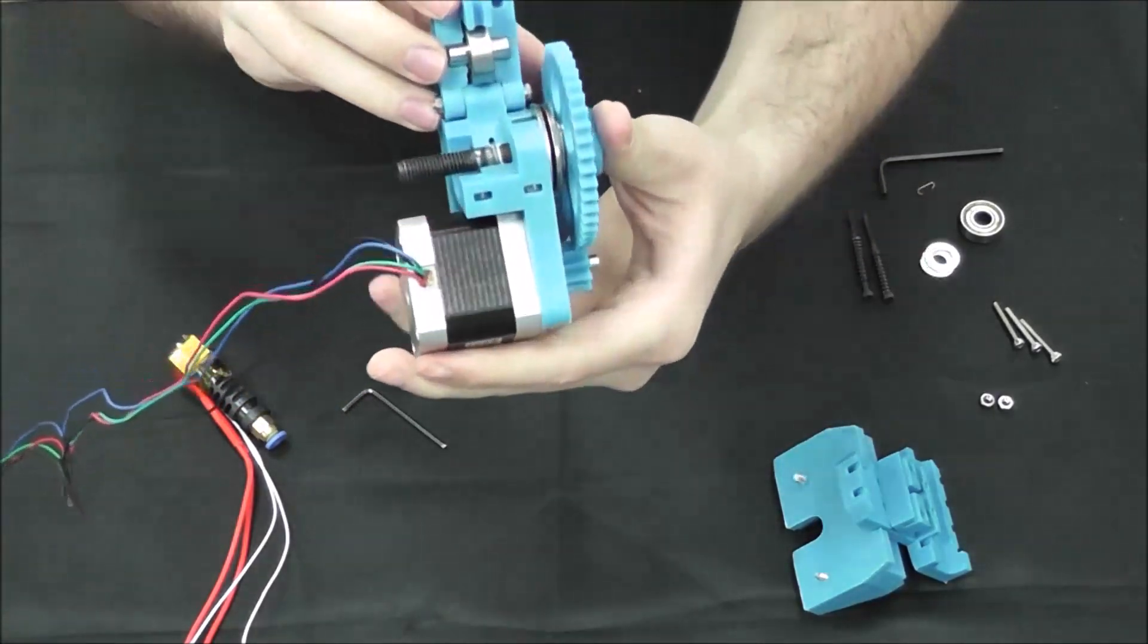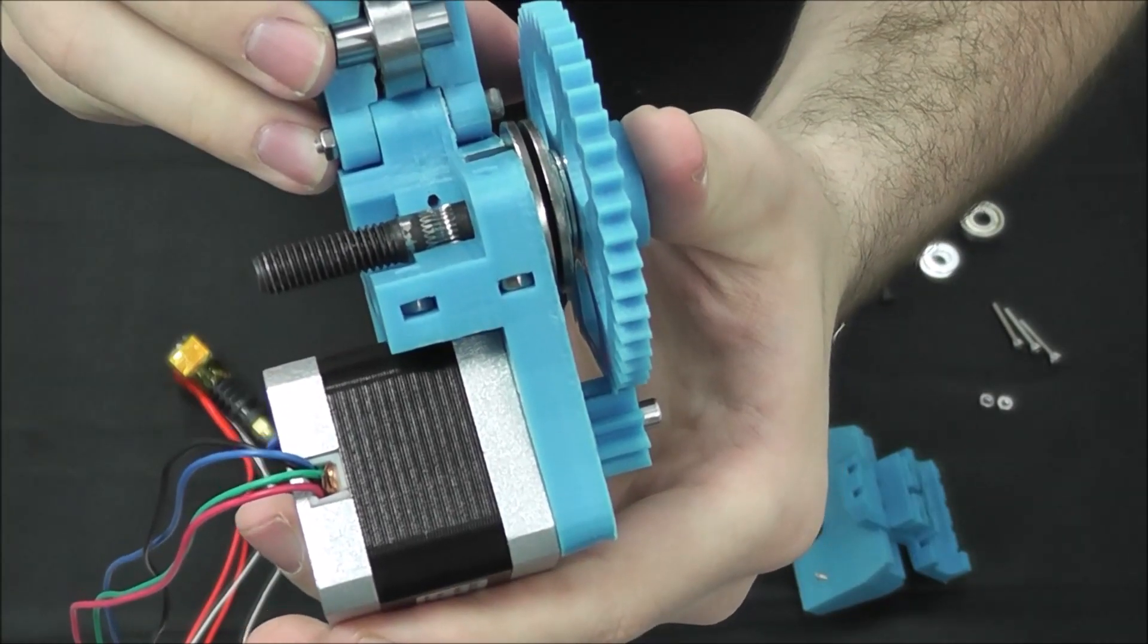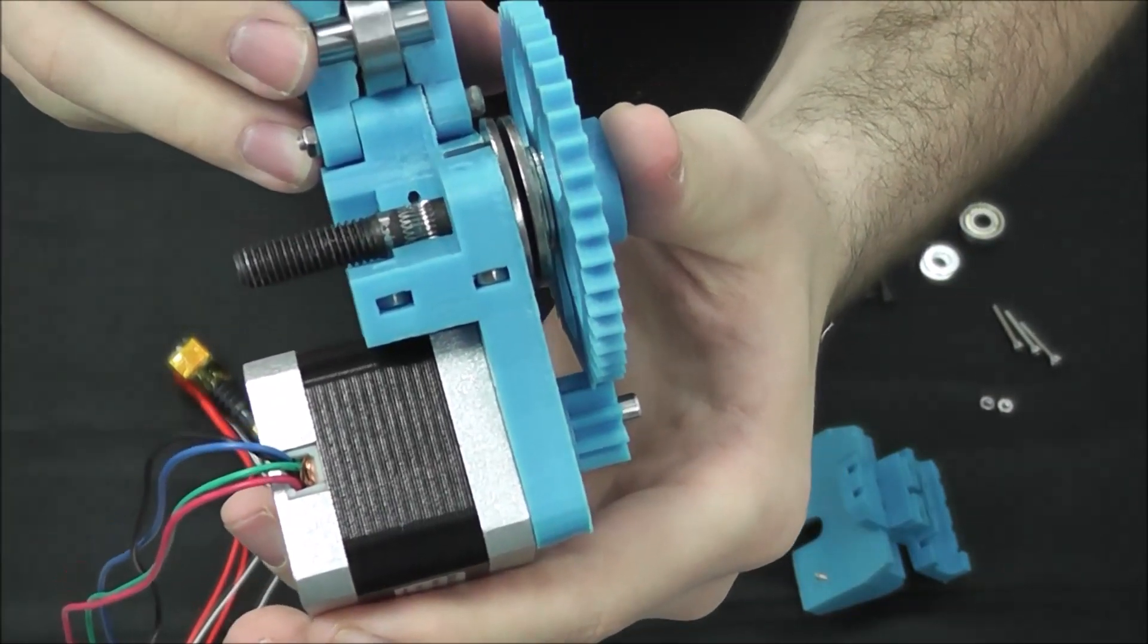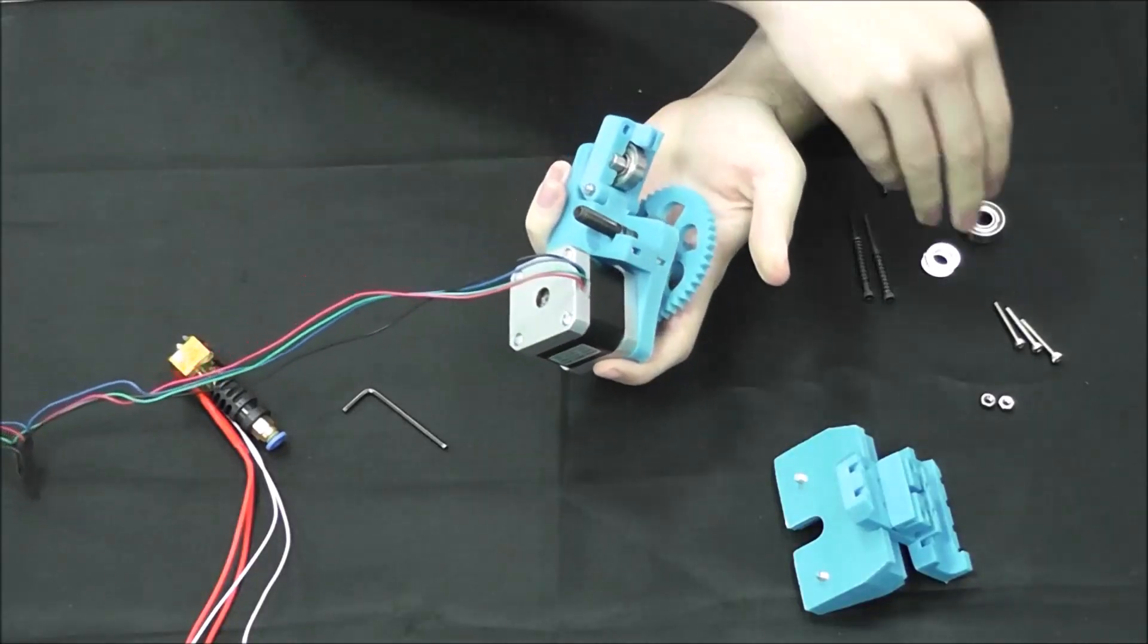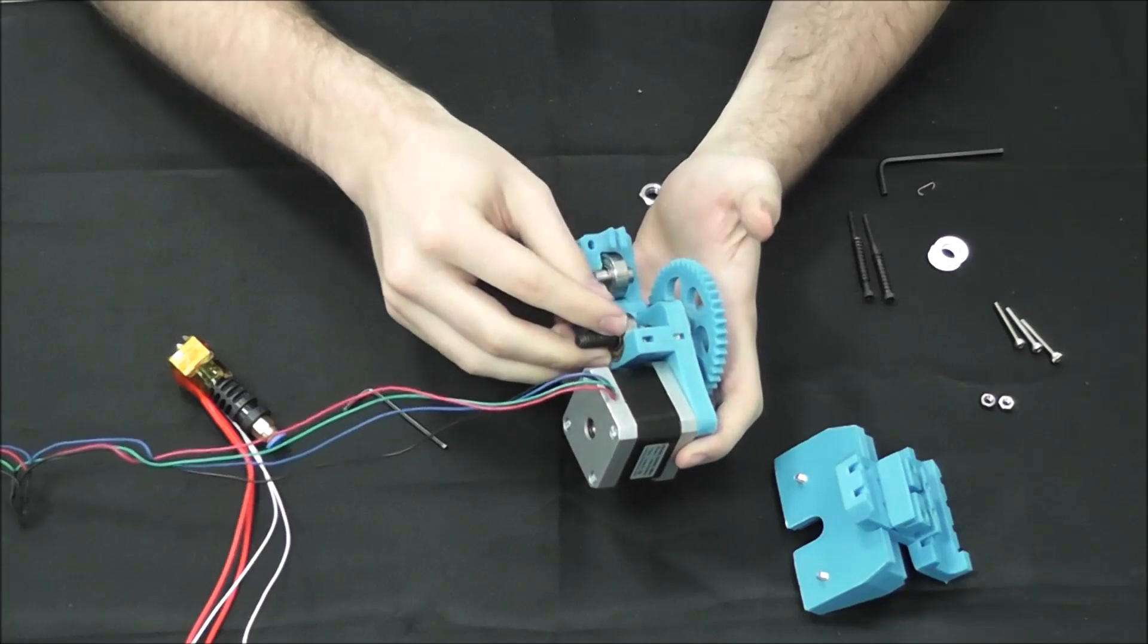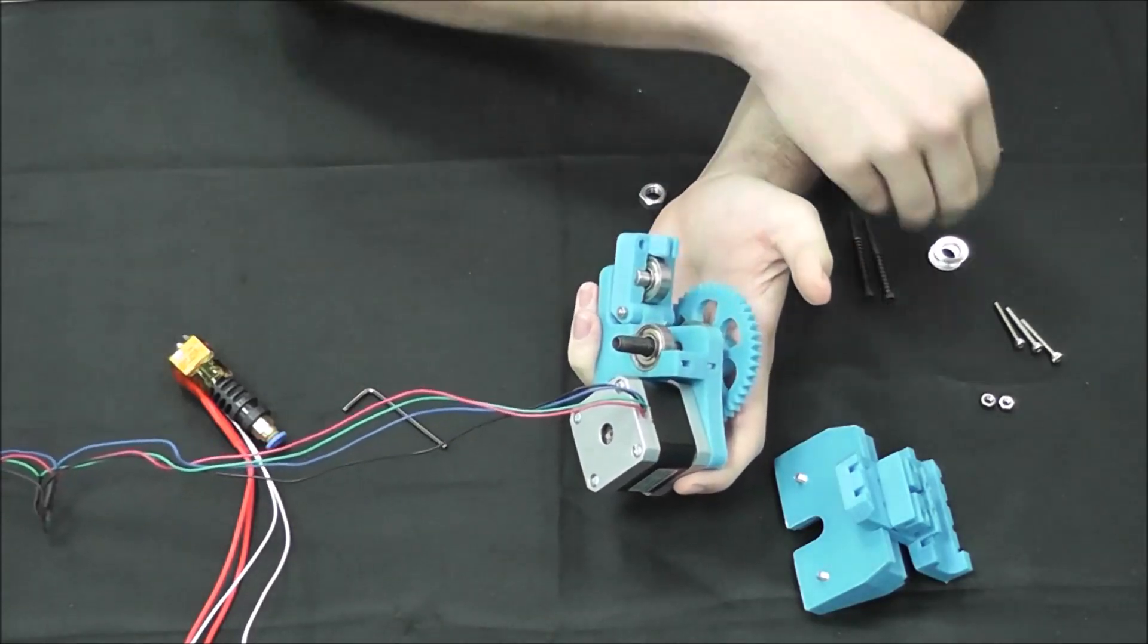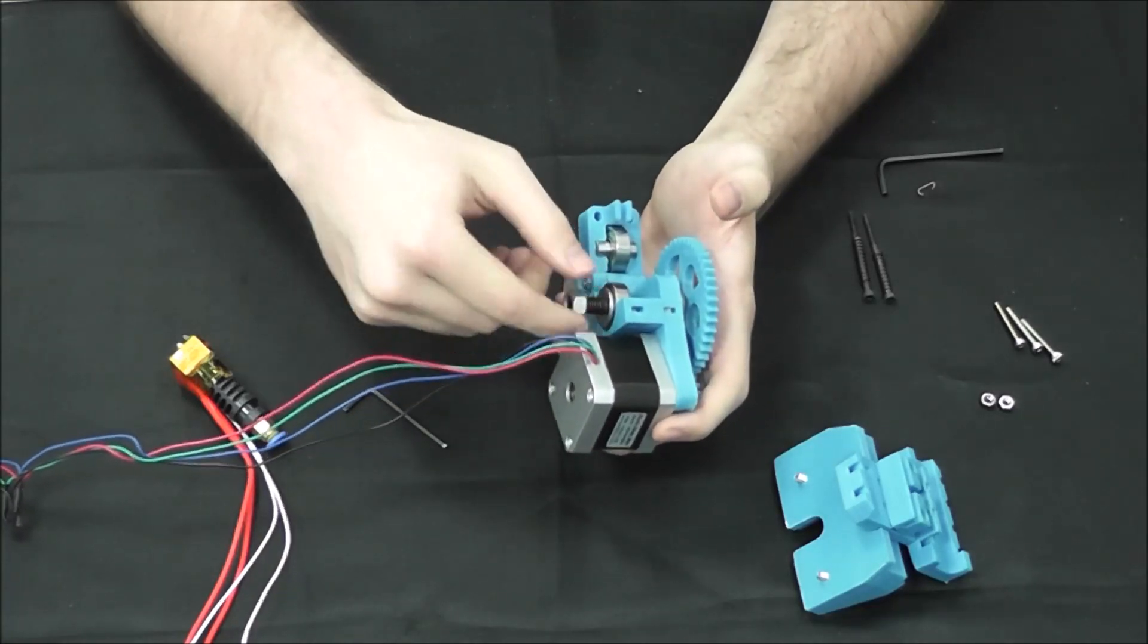This will actually allow the teeth of the hob bolt to line up exactly where the filament will feed through and this will pinch it so that it can work properly. Then you'll slide your roller bearing over so that it fits into the slot provided. Two more M8 washers and then two M8 nuts.